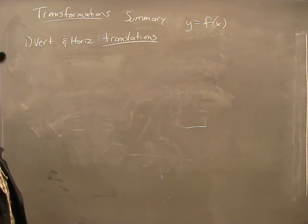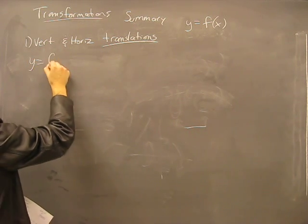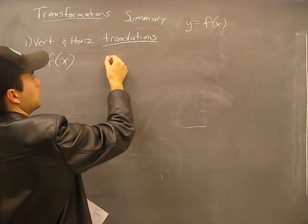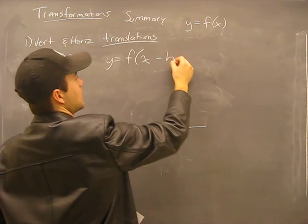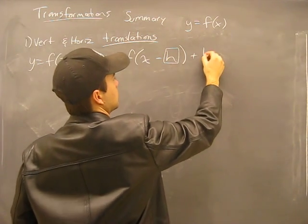First of all, vertical and horizontal translations for any function y equals f of x. This means any function. We have y equals f of x minus h plus k.